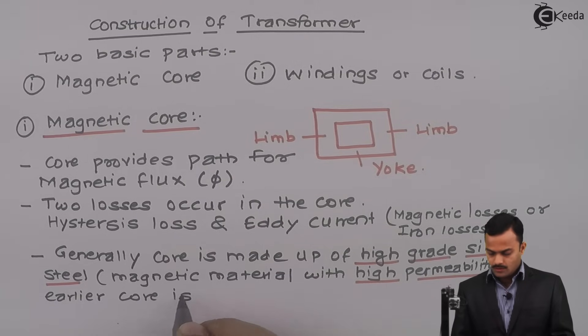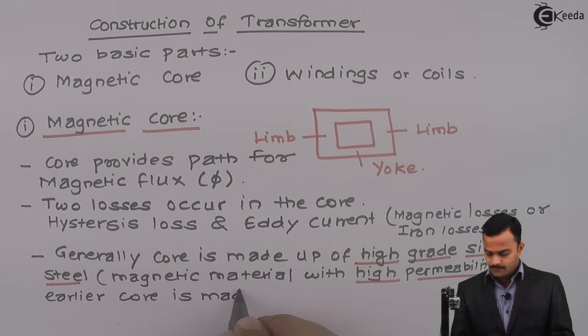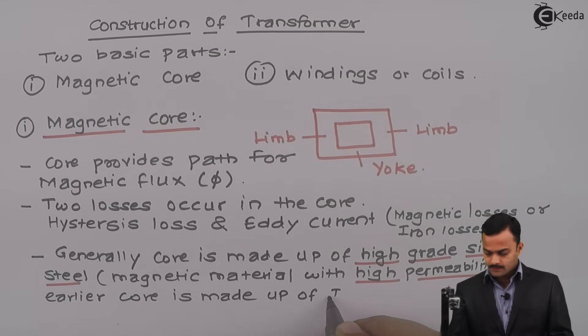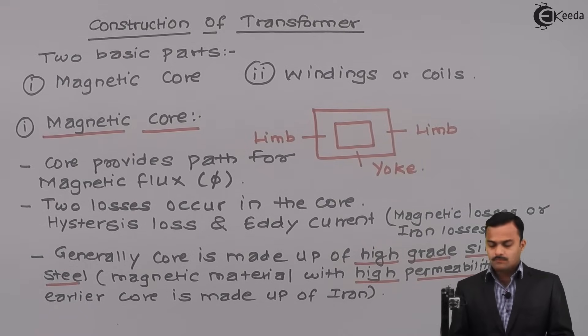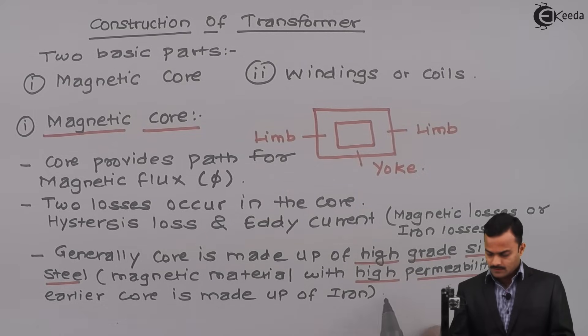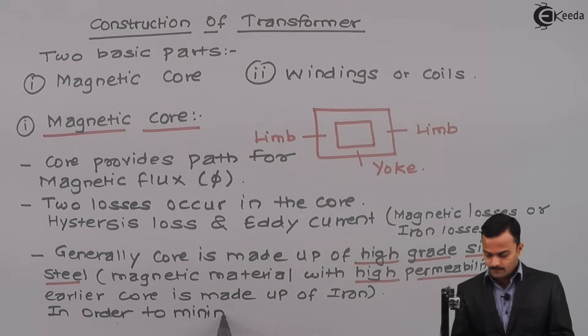Earlier core is made up of iron but now due to advancement in material science we can get a high permeability magnetic material so that hysteresis loss is very low. So why we need this core made up of high permeability material? In order to minimize hysteresis losses.